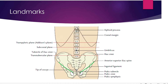Another important point is the tubercle of the iliac crest. If you find the anterior superior iliac spine and go roughly five centimeters behind it, you will get an elevation — that is the tubercle of the iliac crest. The pubic symphysis is the lower limit of the anterior abdominal wall; it is easily palpable and lies at the level of the coccyx posteriorly.